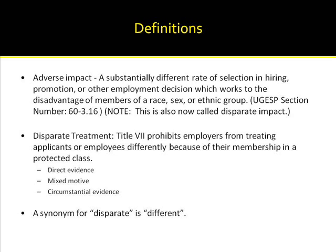Let's turn now to Disparate Treatment. Disparate Treatment is defined as actually treating employees differently based upon their membership in a protected class. We will see that three different types of evidence may be presented: Direct Evidence, Mixed Motive Evidence, and Circumstantial Evidence. It might help you to remember adverse impact and disparate treatment if you remember the synonym for Disparate. The synonym for Disparate is 'different,' so therefore we are looking at different impact and different treatment.